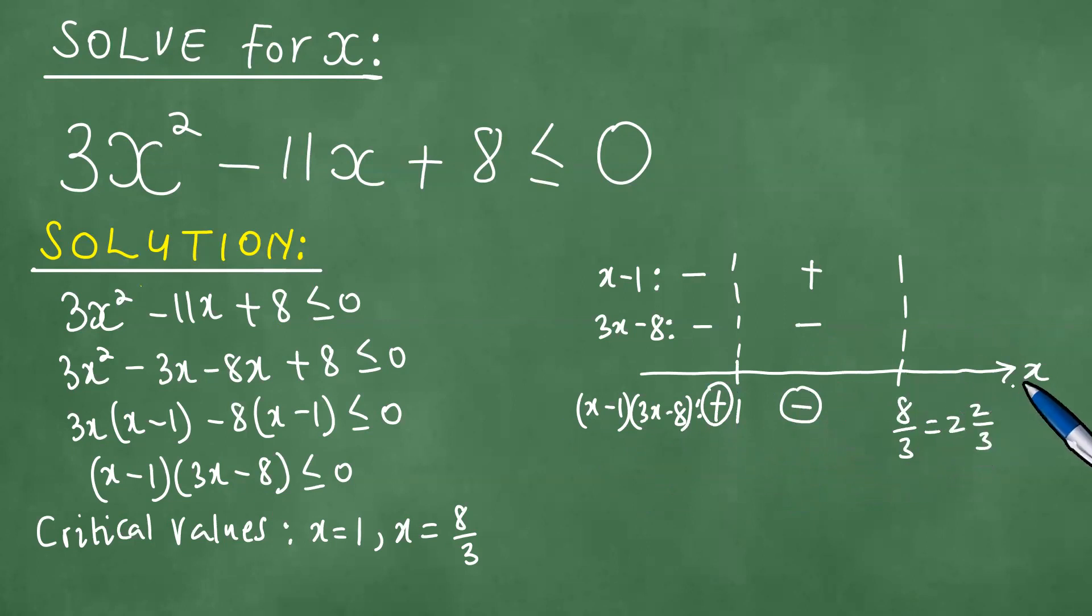Any number bigger than 2, maybe a 10. 10 minus 1 is 9, positive. 3 by 10 minus 8 is 30 minus 8, surely a positive result. And if you multiply, you have a plus there.